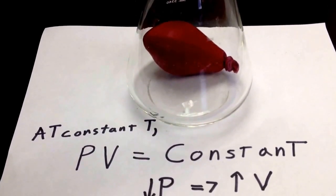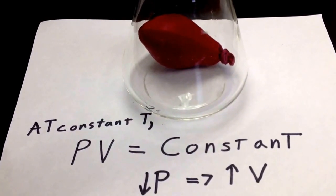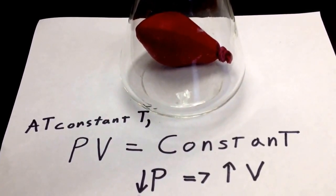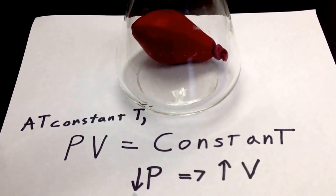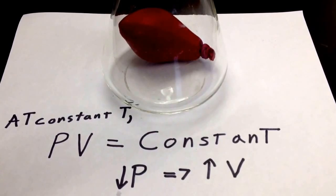Boyle's law states that at a constant temperature, the pressure and volume for a set quantity of gas are inversely related. Mathematically, we can think of it as pressure times volume equals a constant. But the implication is that they go in opposite directions.